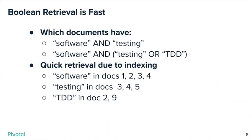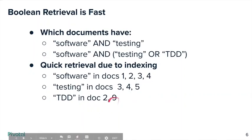Let's say you're interested in getting all the documents that have 'software' and 'testing,' or maybe you're looking for documents that definitely have 'software' but it could be either 'testing' or 'TDD.' With indexing — sometimes referred to as an inverted index — you've gone through ahead of time and found that 'software' is in documents 1, 2, 3, and 4; 'testing' is in documents 3, 4, and 5; and 'TDD' is found in documents 2 and 9. To find 'software AND testing,' you take the intersection, which is documents 3 and 4.